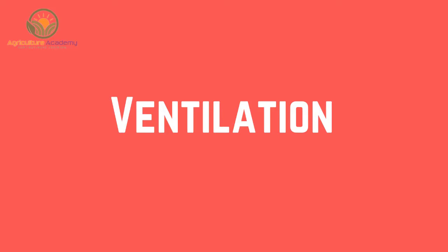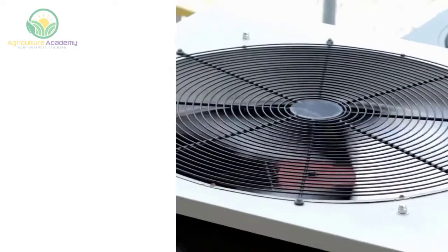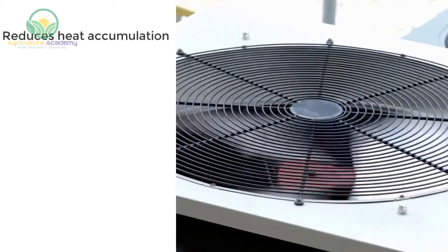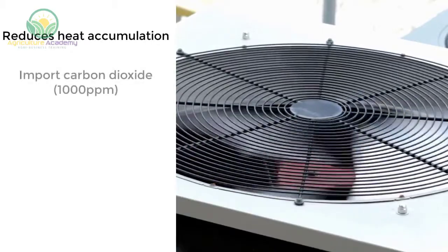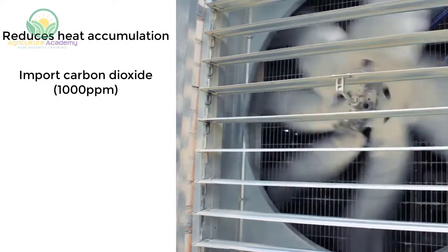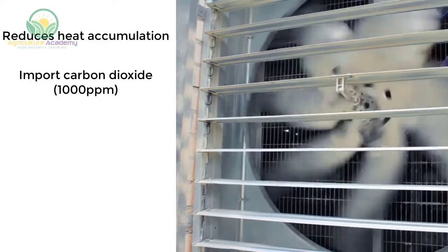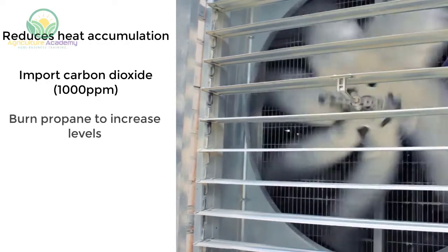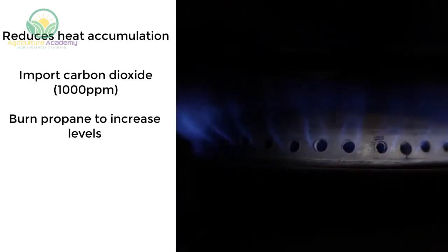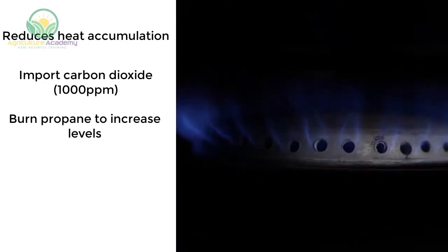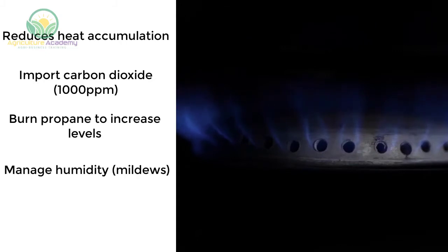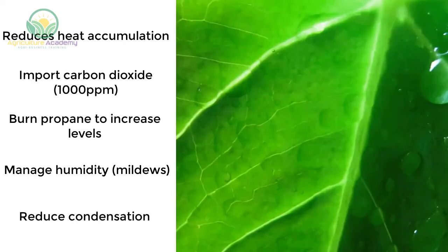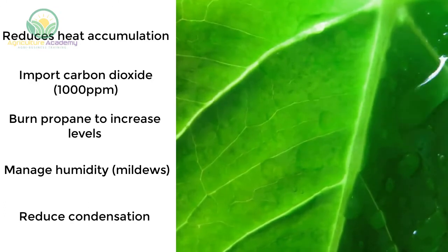Ventilation. Ventilation is important for roses — most importantly, it reduces heat accumulation. Ventilation also imports external carbon dioxide, which should be maintained at 1,000 parts per million. Low carbon dioxide concentrations can be solved by burning propane or using liquid carbon dioxide. Humidity can also be managed, which is important in the control of powdery and downy mildew. Ventilation also reduces condensation on leaves, which is common when temperatures drop and humidity rises.